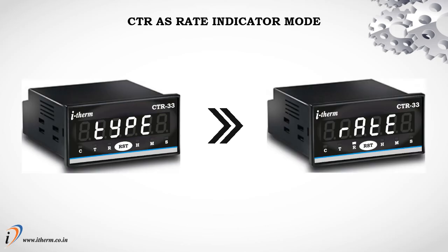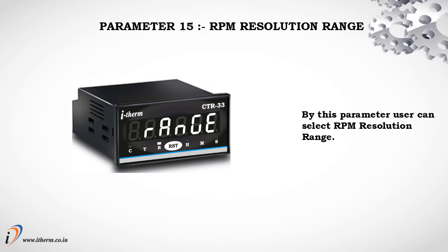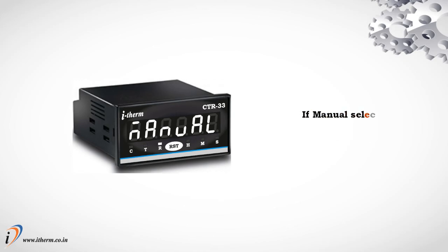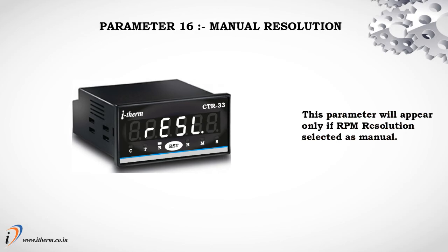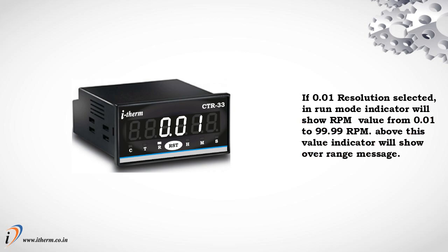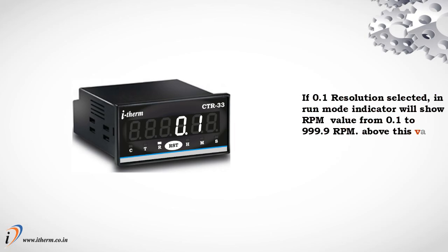CTR as rate indicator mode. Parameter 15: RPM resolution range. By this parameter, the user can select the RPM resolution range. If auto is selected, RPM resolution will change automatically. If manual is selected, the user can select a particular RPM resolution. Parameter 16: Manual resolution — this parameter appears only if RPM resolution is selected as manual. If 0.01 resolution is selected, the indicator will show RPM values from 0.01 to 99.99 RPM; above this value the indicator will show an over-range message. If 0.1 resolution is selected, the indicator will show RPM values from 0.01 to 999.9 RPM; above this the indicator will show an over-range message.